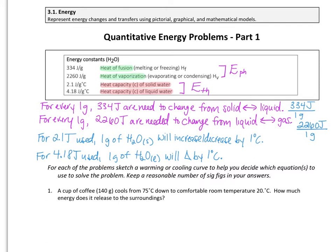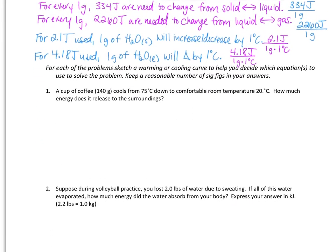Again, this time, if we're going to increase by 1 degree in both of these cases, we would use a positive value for our heat capacity, and if it was going to decrease, we'd wind up with a negative value. So if we write these as a ratio, we would have 2.1 joules over 1 gram times 1 degree Celsius, or 4.18 joules over 1 gram times 1 degree Celsius. And we can use these to solve some problems.